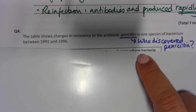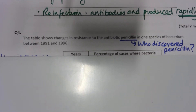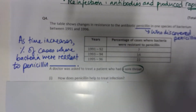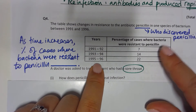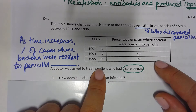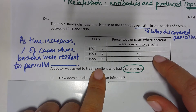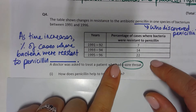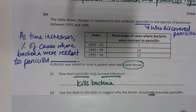The table shows the resistance of antibiotic penicillin in one species of bacterium. You should know who discovered penicillin — it was Alexander Fleming. From the graph, as the years have increased, the number of cases where bacteria are resistant to penicillin has also increased every year.